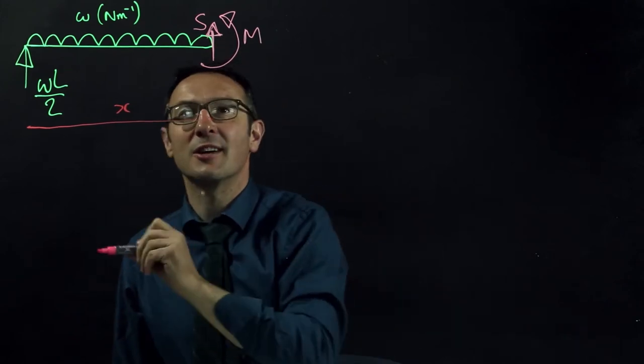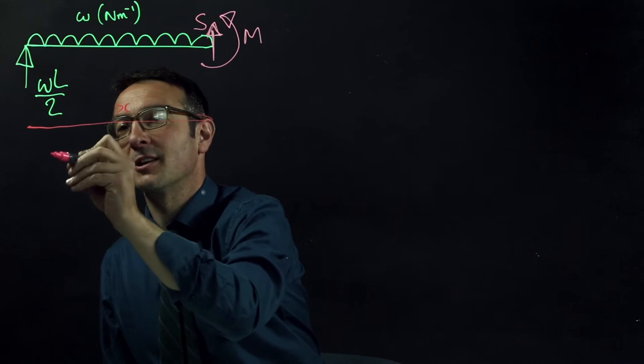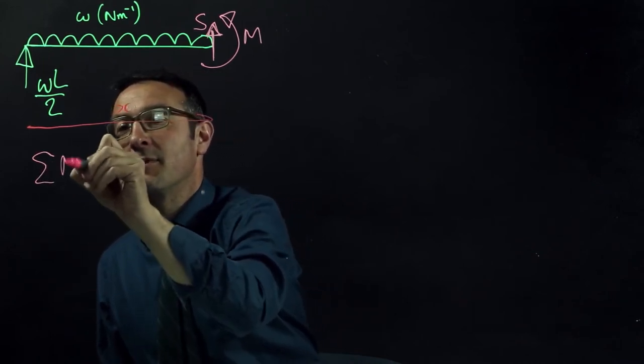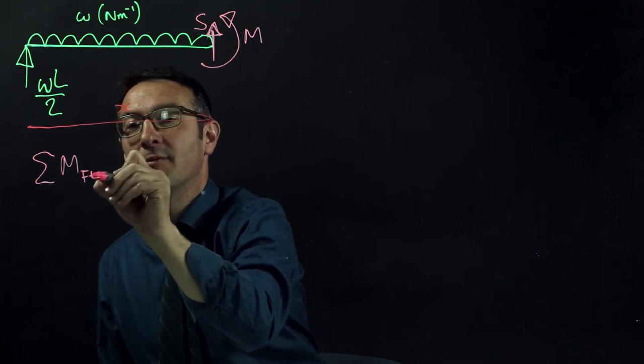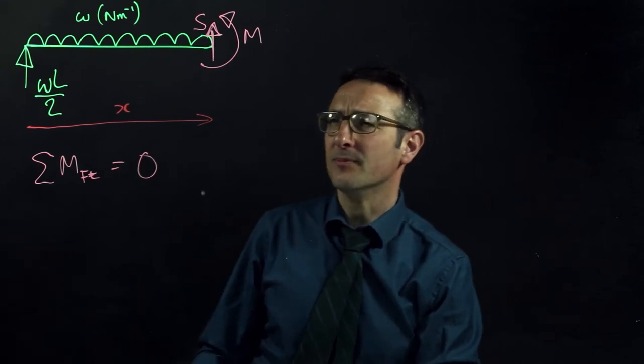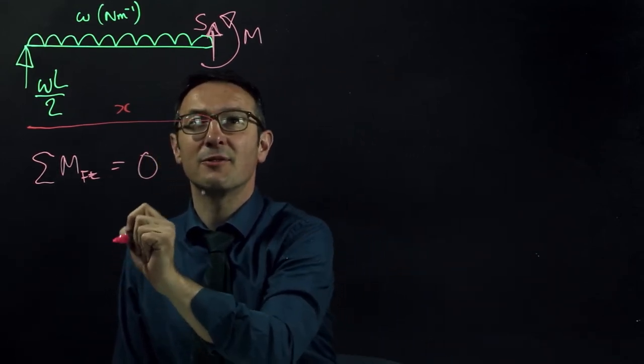Whenever you do calculations you should always say what you're doing, it doesn't matter how you say it, but you need to say it somehow. So I'm going to use a little bit of shorthand, so I'm going to use the summation symbol, I'm going to say the sum of the moments about the free end equals zero. So that's just saying what I'm going to do. So what sort of things cause a moment about the free end?